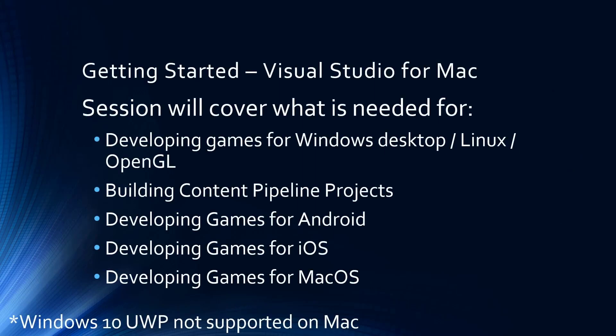What we're going to go through here is everything we can do when building on Mac with MonoGame 3.8. We'll go through Windows desktop, Linux, or OpenGL/DX kind of projects, building content pipeline projects, Android, iOS, and macOS — because they're separate on a Mac. However, the one thing you won't be able to do on a Mac is build for Windows 10. Just like building for Mac requires a Mac, if you're building for Windows 10 you need to be on Windows 10 to have the build pipeline and chain to actually do it.